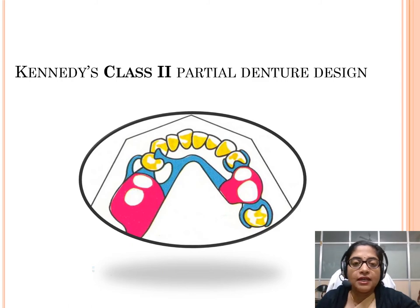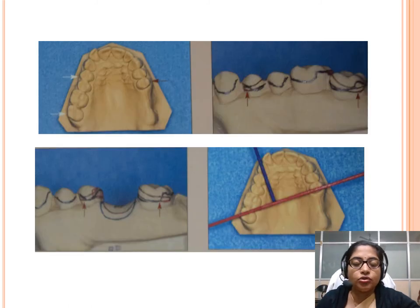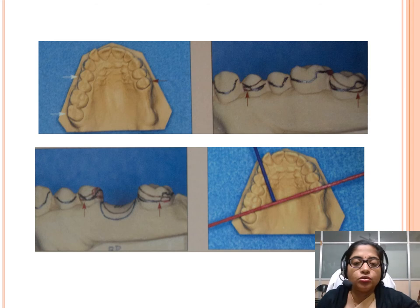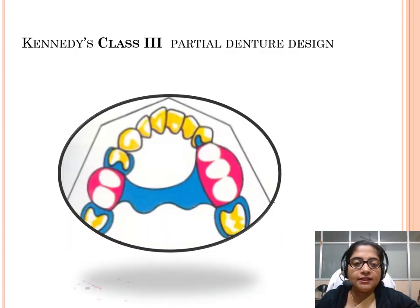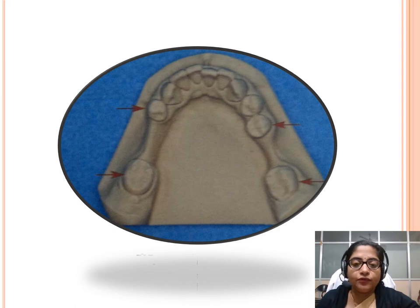For Kennedy's Class 2 partial denture design — a unilateral edentulous area — the rule followed is: draw the line joining the two terminal abutments, drop a perpendicular to that line, and the point where it lands indicates the location of the indirect retainer.